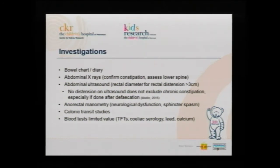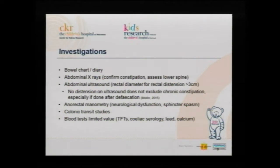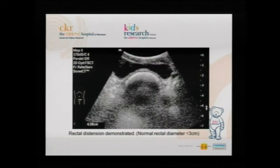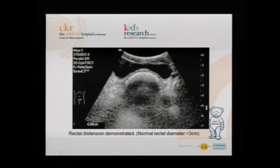Anal rectal manometry is sometimes done, mainly in Melbourne — we don't do it here. Colonic transit study is something I'm increasingly doing in really complex kids; it's a nuclear medicine study that looks at colonic transit time and detects kids with slow transit constipation, differentiating whether they're slow all the way or sluggish just at the end. Blood tests are of limited value but can detect hypothyroidism, coeliac disease, lead poisoning, and hypercalcemia. This is a lovely ultrasound showing the rectum pushing into the bladder — when parents visually see that, they understand what you mean. The measurement should be less than three centimetres.